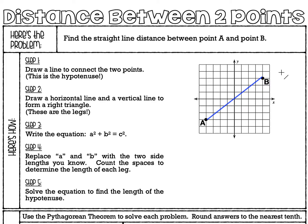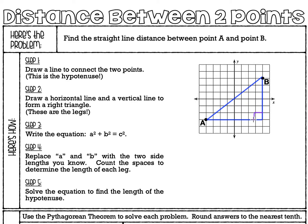This line is going to be the hypotenuse of a right triangle. You're probably thinking, but where's the right triangle? We are going to draw it. I'm going to draw two more lines — a horizontal line across the bottom and then a vertical line going up the side. Now points A and B have turned into a right triangle. I'll mark off where the right angle is.